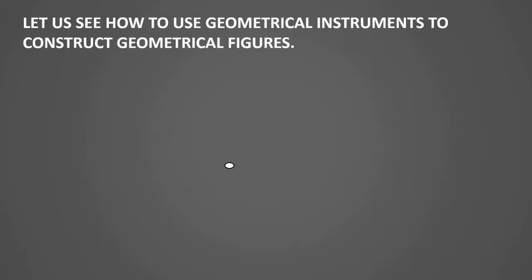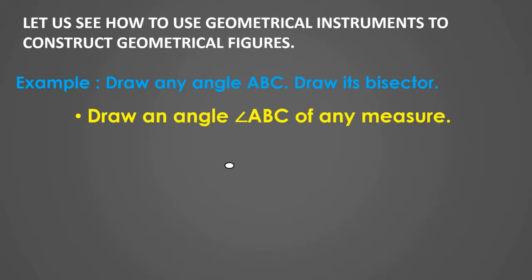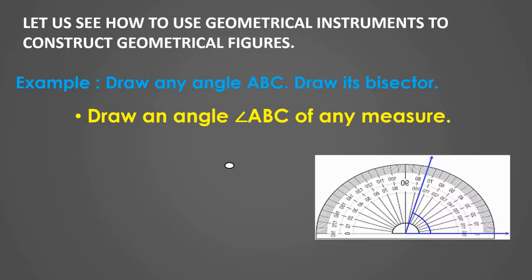Let us see how to use geometrical instruments to construct a geometrical figure. Example: draw any angle ABC, then draw its bisector. The first step is to draw an angle ABC of any measure using a protractor.